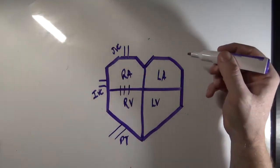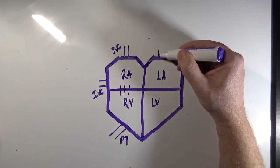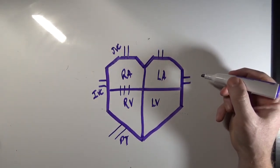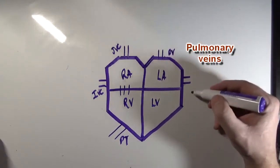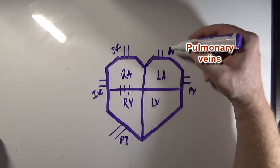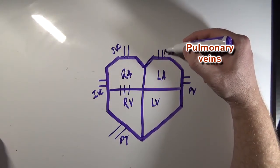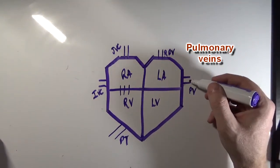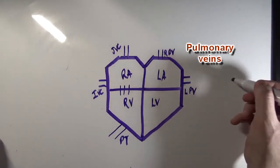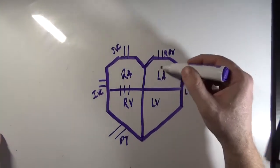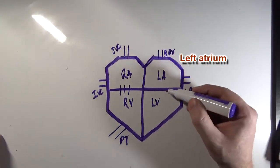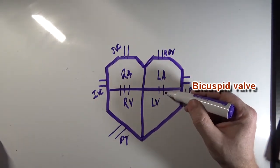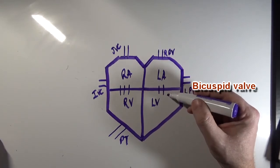After the blood has picked up oxygen at the lungs, it's going to come back to the left atrium through the pulmonary veins. This one we'll call the right pulmonary vein because it collects blood from this side, and these would be the left pulmonary veins collecting blood from this side. That oxygenated blood will collect in the left atrium.